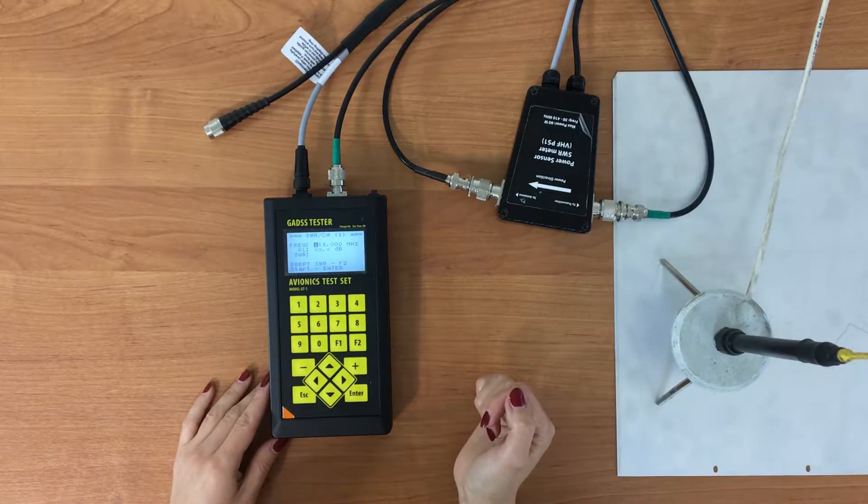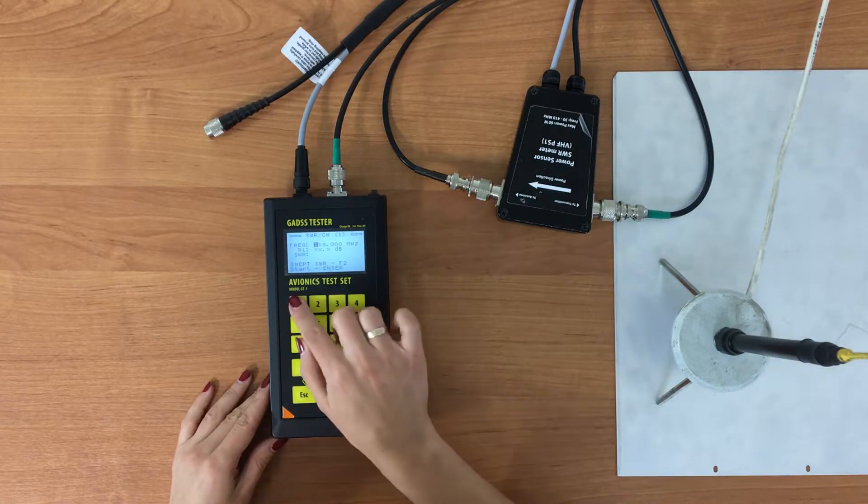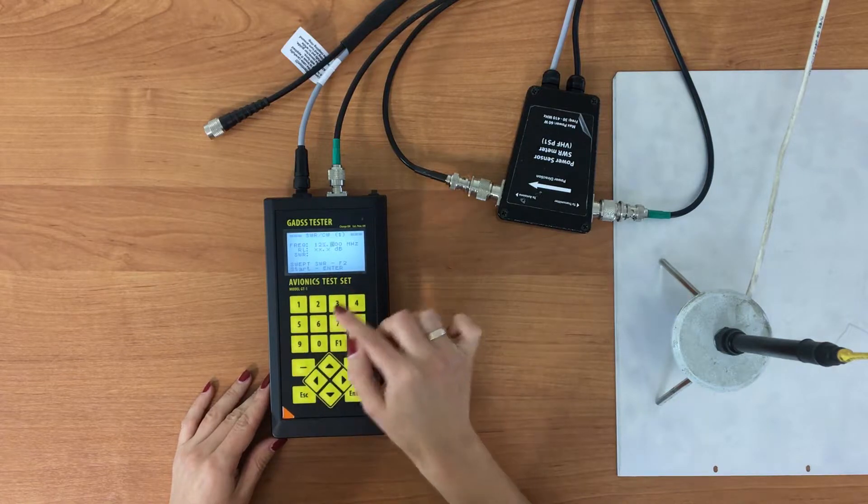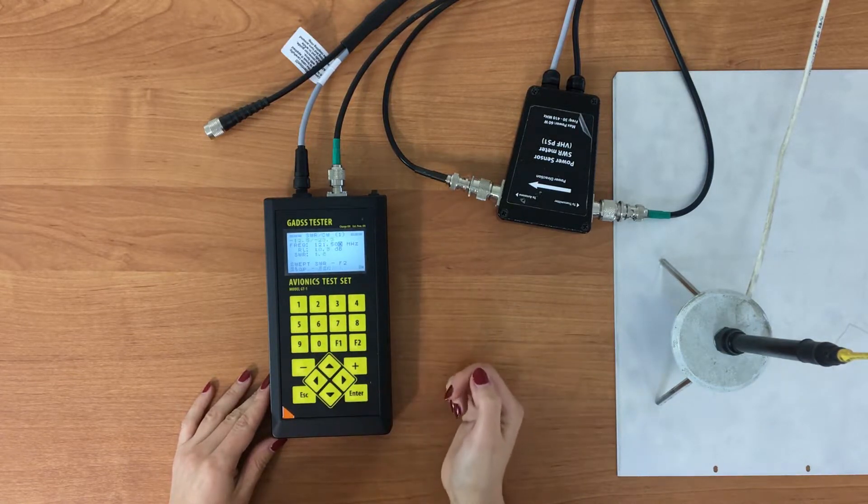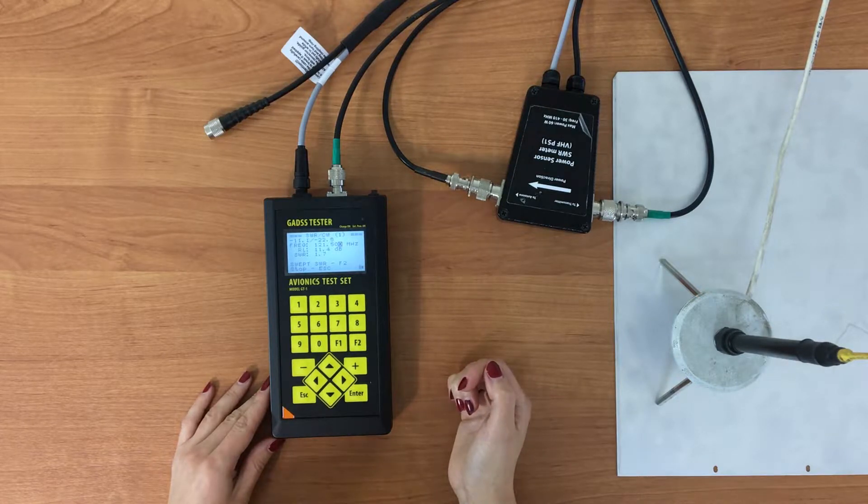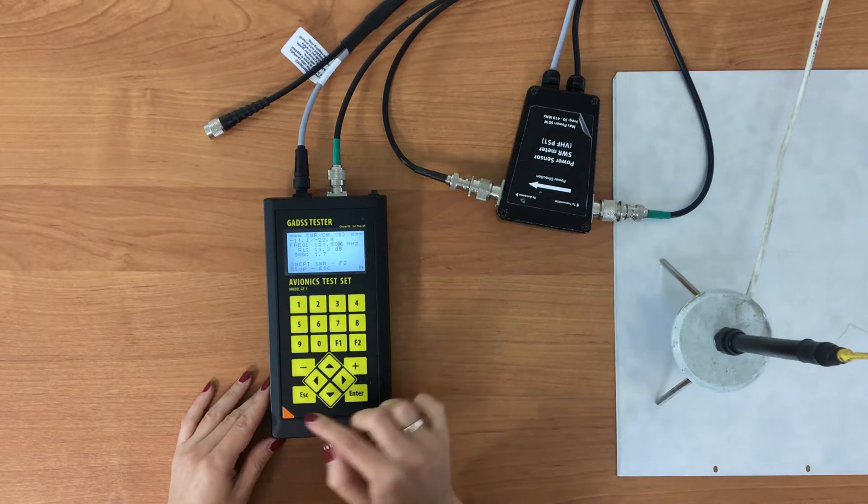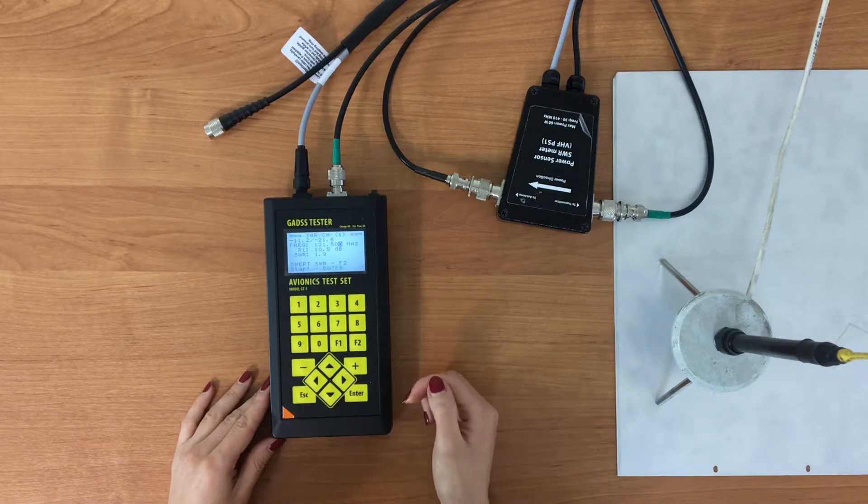So we go on and check 121.5 MHz frequency. Input the carrier and press ENTER. Press ESC to STOP measurements.